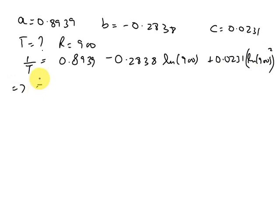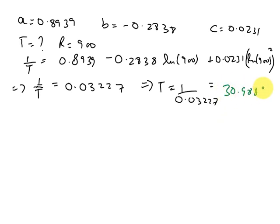So from here, we get 1/T equals 0.03227. So we get T as 1 divided by 0.03227, which is simply equal to 30.988 Kelvin.